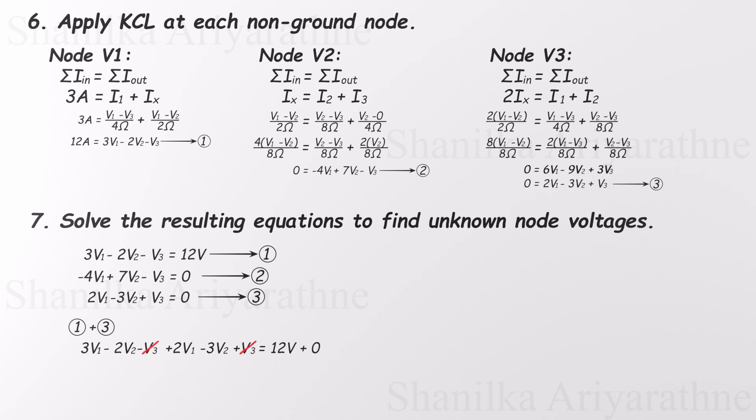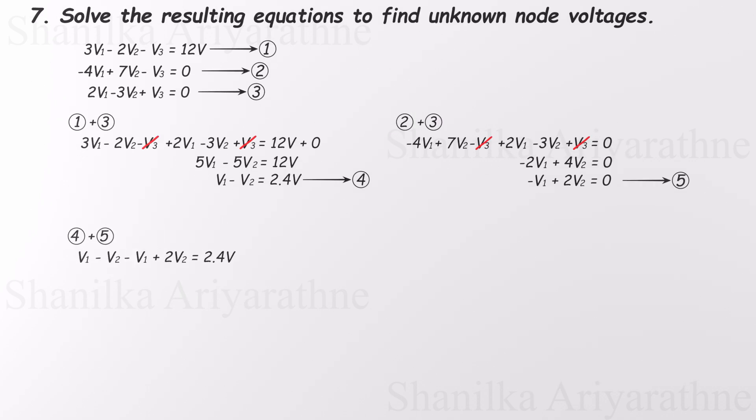That gives us a new relationship between V1 and V2. Let's call that equation 4. Next, I add equation 2 and equation 3. Again, V3 drops out, and we get a second relationship between V1 and V2. We'll call this one equation 5. Now here's the clever part. By adding equation 4 and equation 5, we eliminate V1 completely.